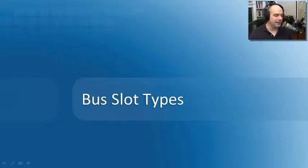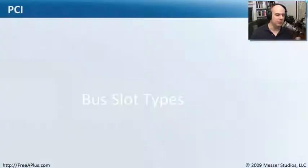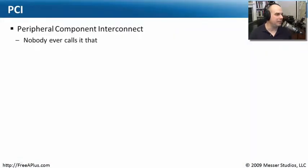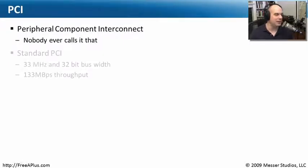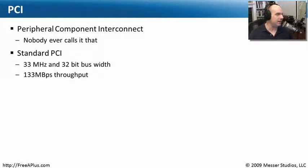There have been a lot of different kinds of bus slots. We'll start with one of the most popular called PCI, or a Peripheral Component Interconnect bus. Nobody ever calls it the Peripheral Component Interconnect bus — it's always a PCI bus. The standard PCI that first came out was a 33 megahertz speed with a 32-bit bus width.